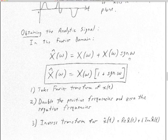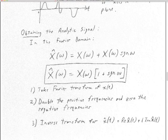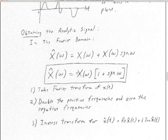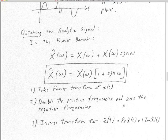Signum is just: at negative omegas it's negative one, zero at zero, and at positive omega it's positive one. We factor out X — one plus signum of omega is a real number we multiply by a complex number at each frequency omega, which takes exactly N operations. So we take the Fourier transform, multiply by one plus signum of omega at each omega — which doubles the positive frequencies and zeros the negative frequencies — and that gives us the Fourier transform of the analytic signal.